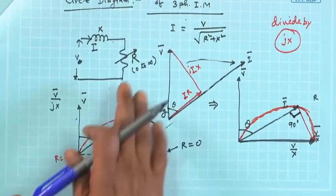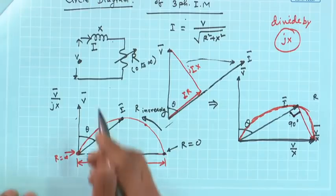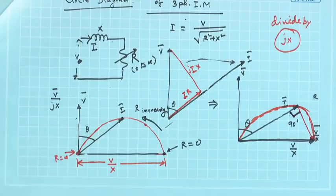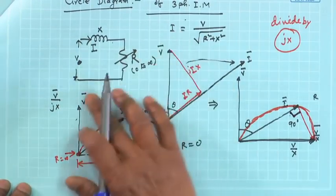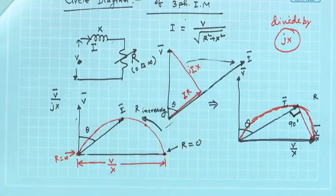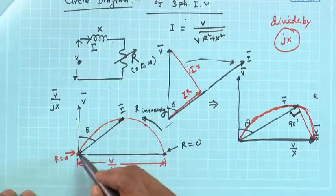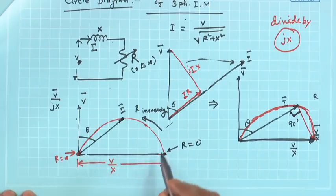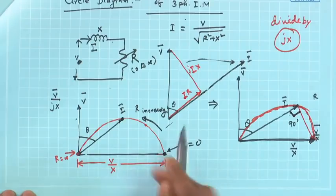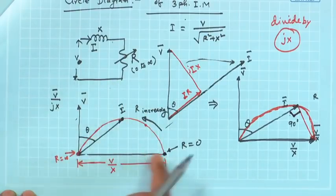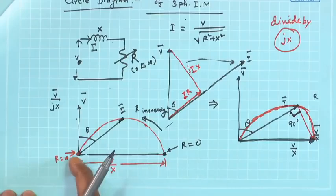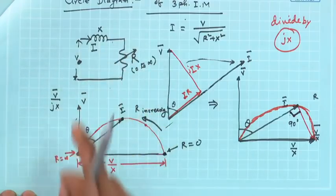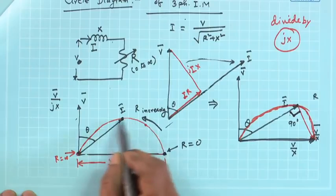As a prelude to this, we verified that in the case of any R-L circuit excited by a fixed voltage at fixed frequency, if the resistance is varied from 0 to infinity, then the locus of the tip of the current phasor will be a circle. The diameter of the circle will be V/x, where x is the inductive reactance. Note that the point R=0 corresponds to the current being V/x lagging by 90 degrees, and the point R=infinity corresponds to impedance being infinitely large so current drawn will be 0.